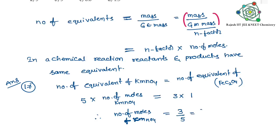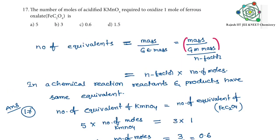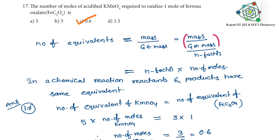And now number of moles of KMnO4 is equal to 3 by 5, that is equal to 0.6. So we can take it like that. In the given options, 0.6 is the answer for this.